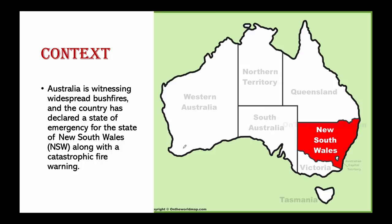Today's context: Australia is witnessing widespread bushfires and the country has declared a state of emergency for the state of NSW, that is New South Wales. Here you can see the map of Australia — this is Western Australia, Northern Territory, South Australia, Queensland, New South Wales. We are talking about this particular area: New South Wales, and Victoria is also there. The bushfires are actually spreading very fast along with catastrophic fire warnings by the government.